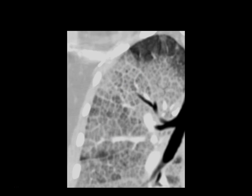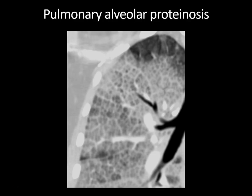Crazy paving is a nonspecific pattern that can be seen in pulmonary edema, diffuse alveolar hemorrhage, ARDS, and also Pneumocystis jirovecii pneumonia in immunocompromised patients. But in a patient with a subacute or chronic history of indolent lung symptoms like this, this turned out to be pulmonary alveolar proteinosis. The majority of cases — about 90% — are autoimmune, leading to intra-alveolar accumulation of proteinaceous granular material. Secondary causes include hematologic malignancies and inhalational causes like silica dust exposure leading to silica proteinosis. Treatment is typically whole-lung bronchoalveolar lavage.